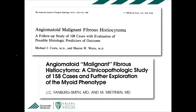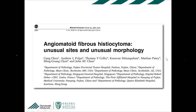Angiomatoid fibrous histiocytoma has a high rate of local recurrence (20–40%) but a low rate of metastasis (less than 5%) — it can spread to lymph nodes and exceptionally rarely to lungs or other sites. It most commonly presents in children and young adults, superficially on the extremities. It has been described in many other sites: lungs, mediastinum, vulva, heart, pelvis, and bone. Bizarrely, patients can have systemic symptoms — night sweats — presumably from cytokines secreted by tumor cells, which resolve after resection.